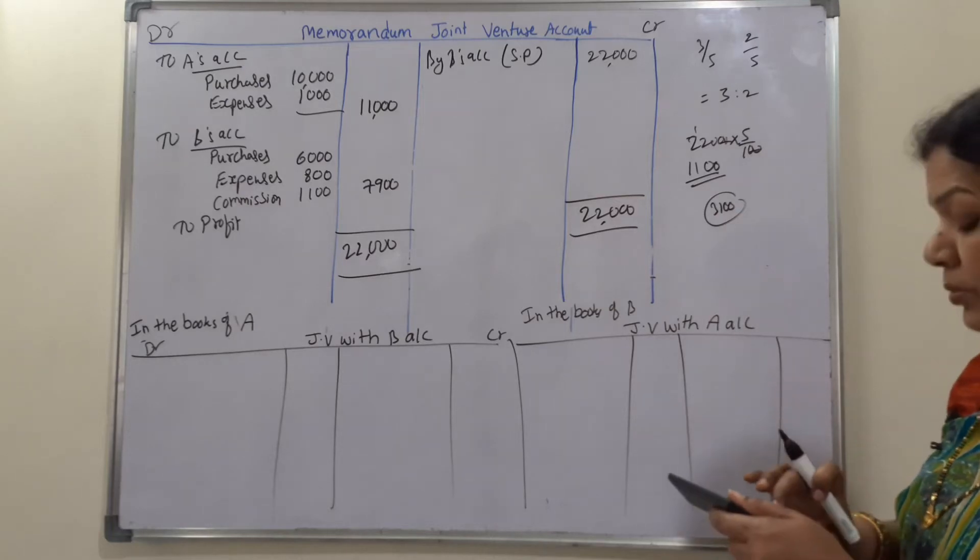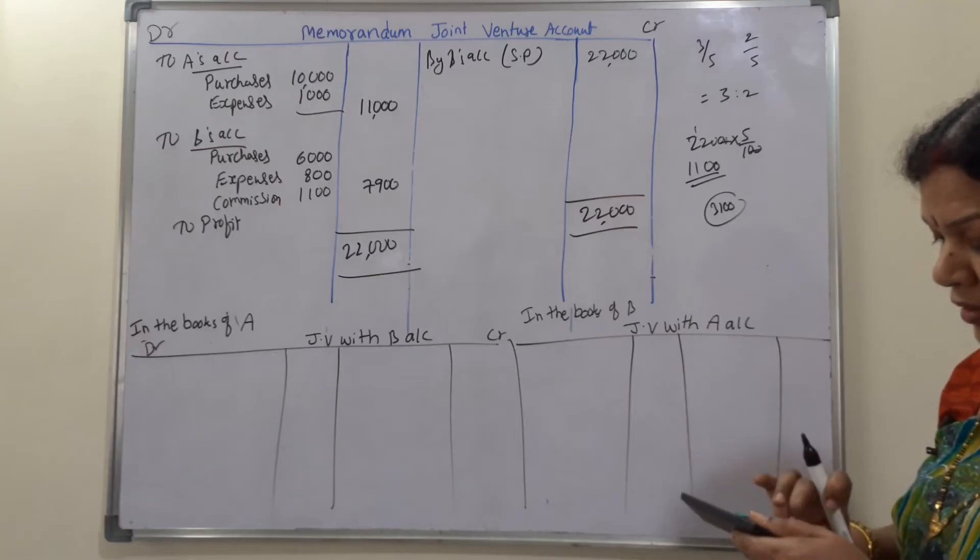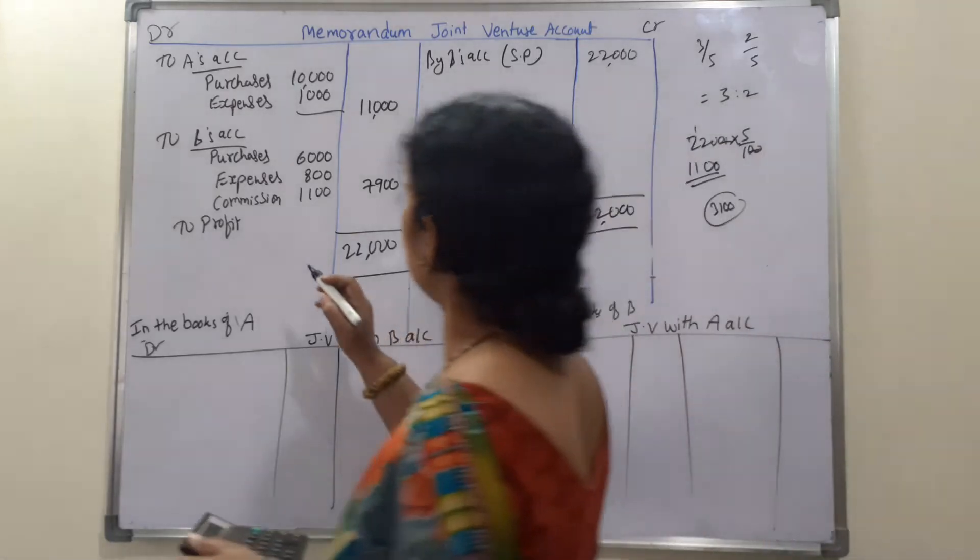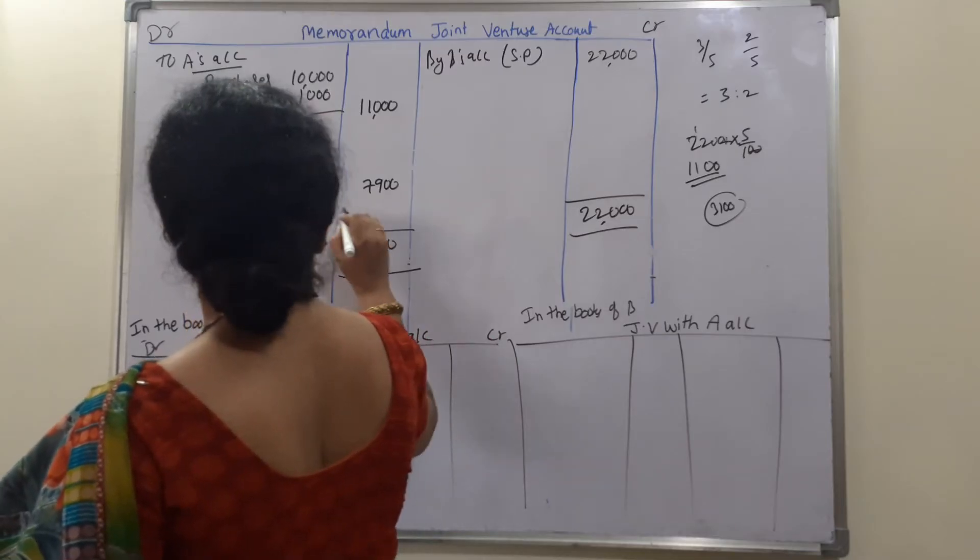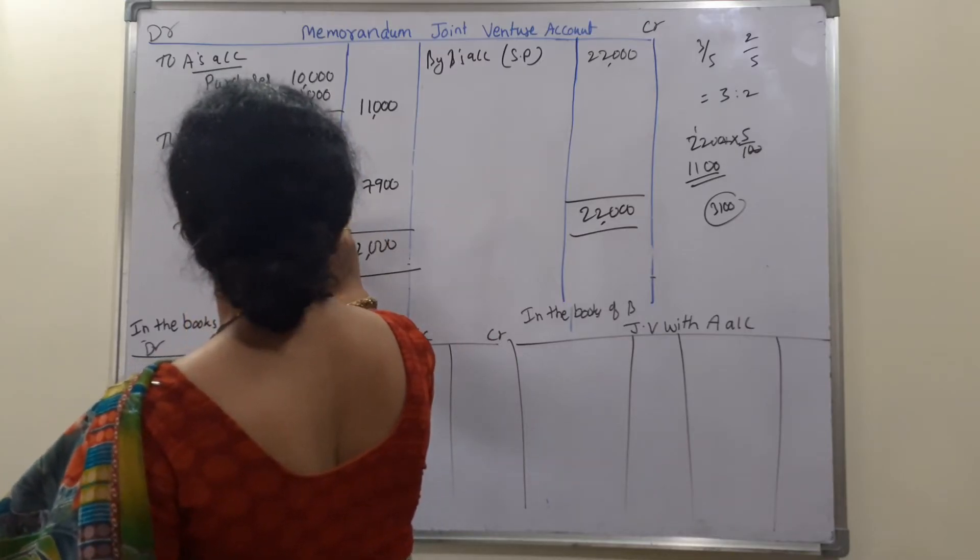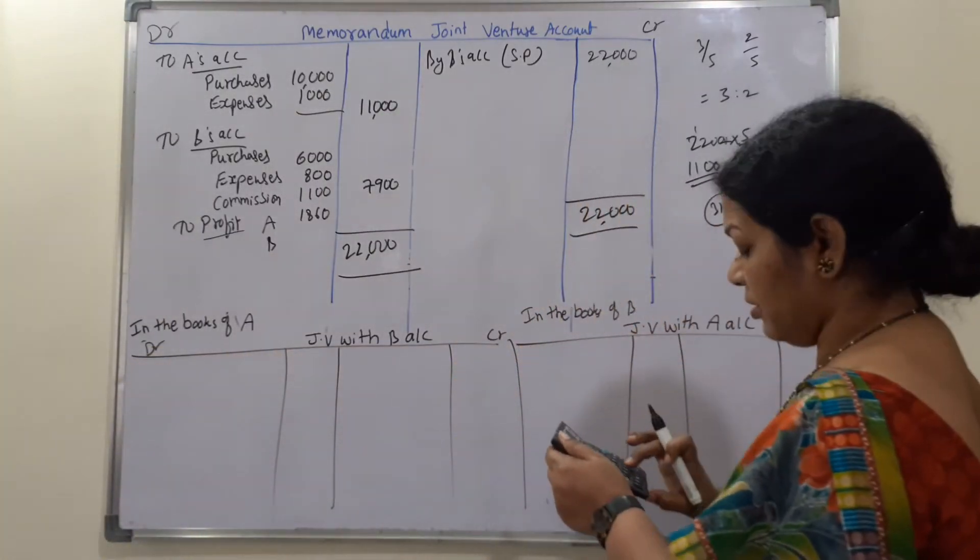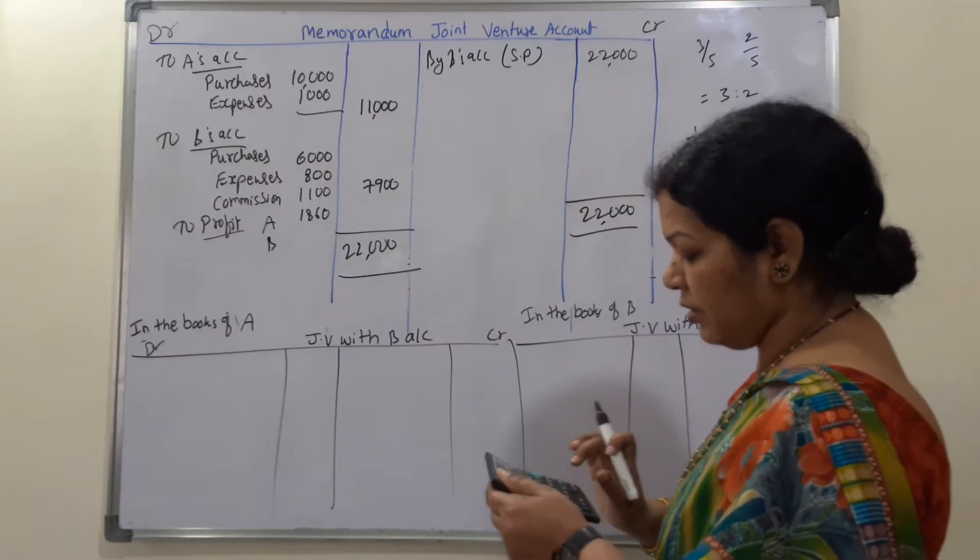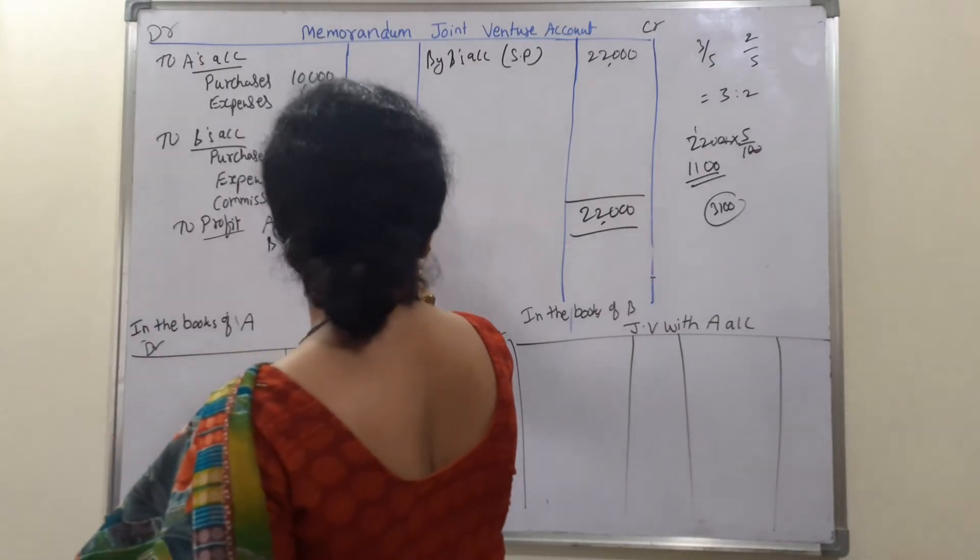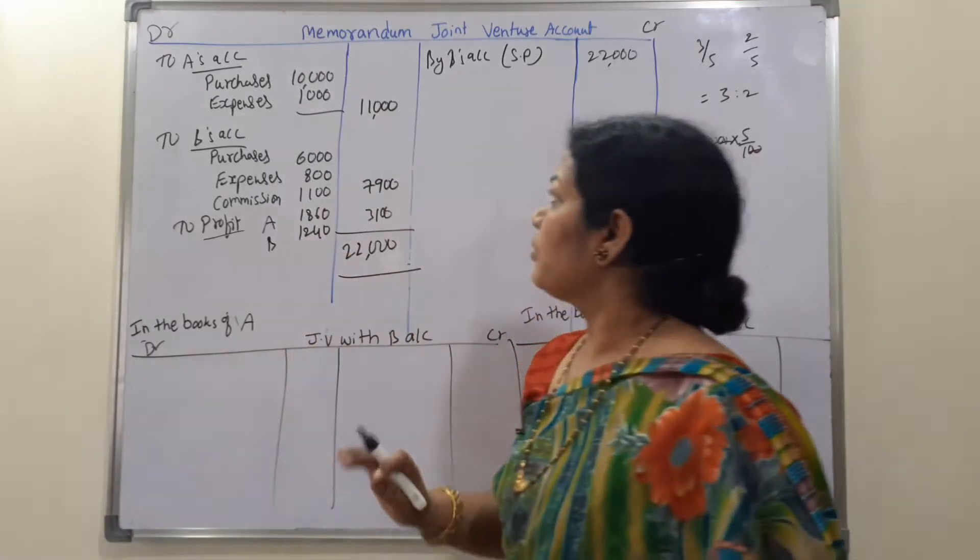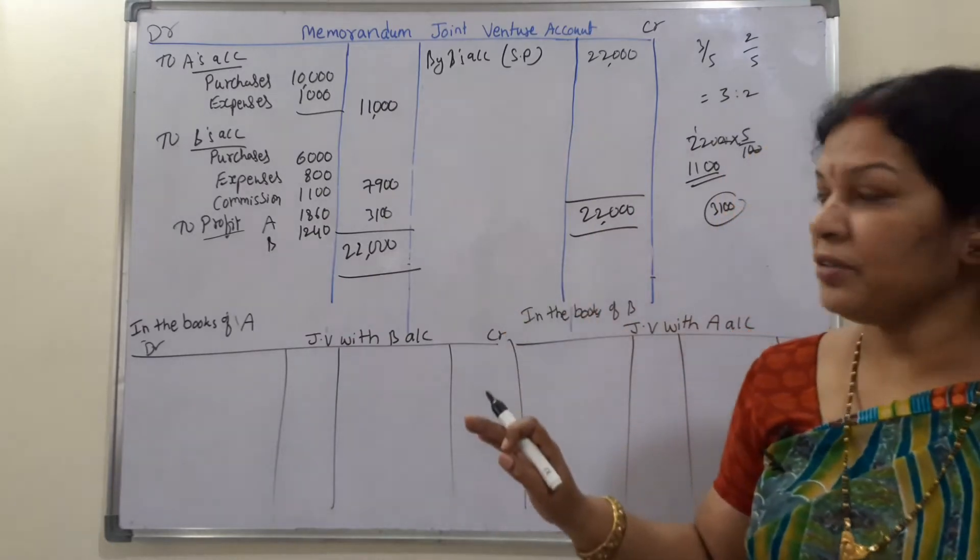See, 22,000 minus 11,000, 11,000 minus 7,900, it is 3,100. We are getting profit 3,100 in the ratio of 3 is to 2, means 3,100 into 3 divided by 5, it is 1,860 for A, and for B rest of the amount, 1,860 minus 3,100, 1,240. Total is 3,100. So this is memorandum joint venture account.